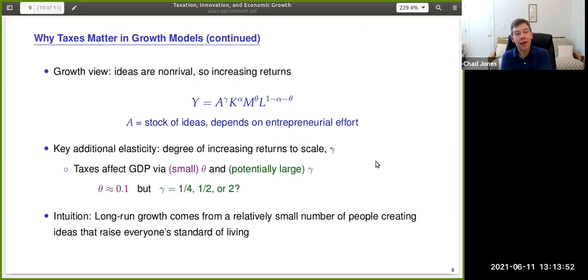I would say that the modern growth theory view adds an important wrinkle to that. And that is that it's not just through M that things matter. Instead, ideas enter the production function as well. And those ideas are non-rival. And so the production function is characterized by increasing returns. So there's this A to the gamma term that multiplies the neoclassical production function that I showed you before. A is the stock of ideas. And those ideas depend on entrepreneurial effort that in turn respond to taxes. And so now we've got this key additional elasticity related to the degree of increasing returns to scale that tells us how taxes affect GDP.